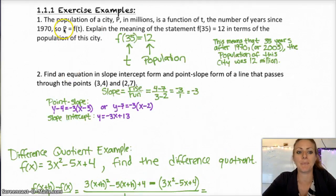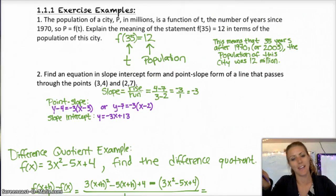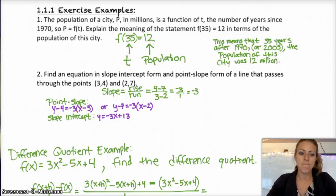So the first one, we have p equals f of t, where the population is p in millions. And it's a function of time, the number of years since 1970. So when time is zero, that is the year 1970. So the meaning of f of 35 equals 12 basically means that when t is 35, or 35 years after 1970, which is also 2005, the population of the city was 12 million. So t is 35, population is 12 in millions. And you would want to say it in layman's terms, like if you were explaining it to somebody who didn't speak any math. In 2005, the population of the city was 12 million. That's the easiest way to say that that would make sense to anybody.